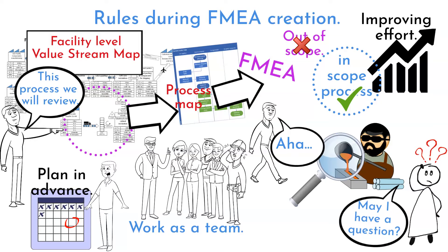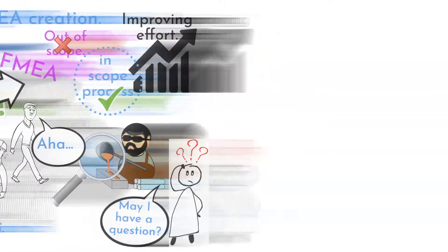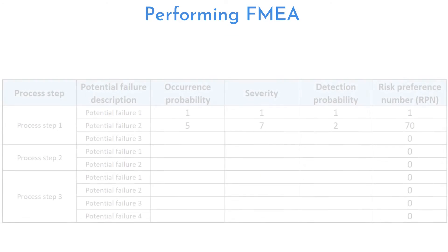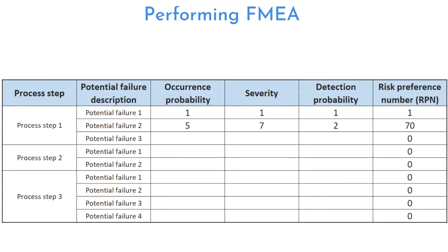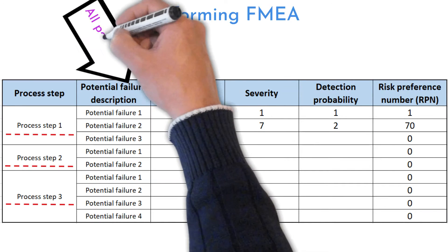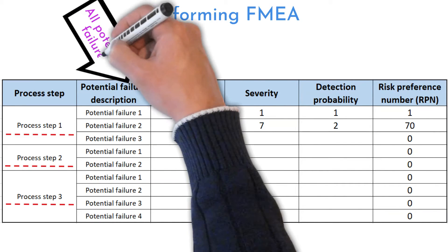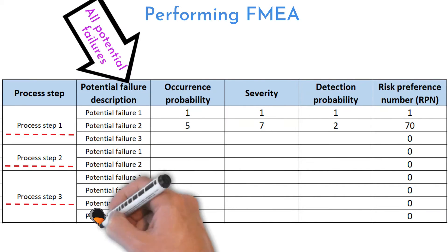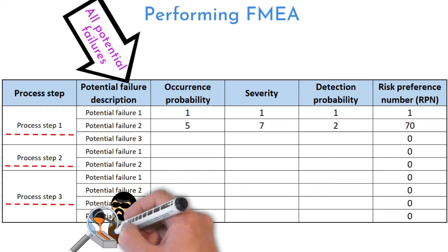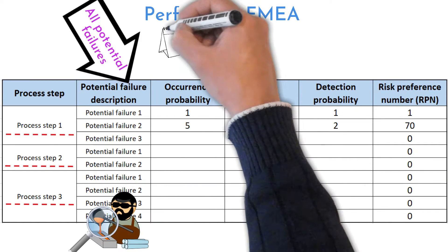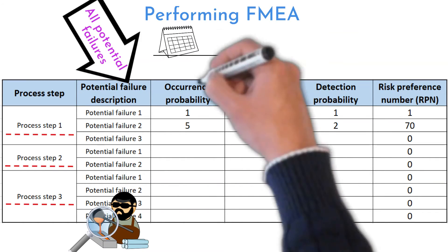It is a bit tedious, but you will create and fill a table. Write down each process step. There can be several potential failures in each step, and personal observation will help you avoid skipping anything.